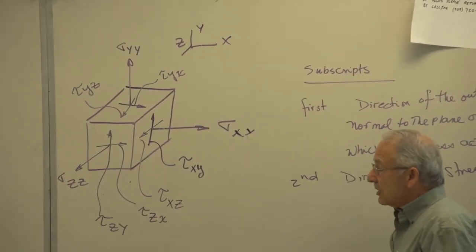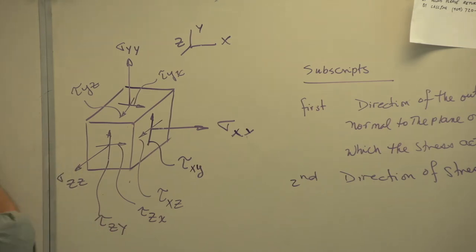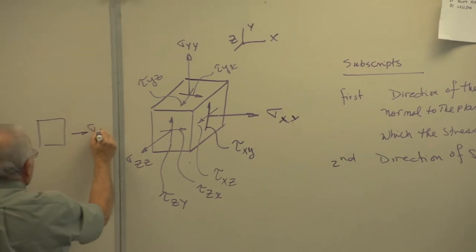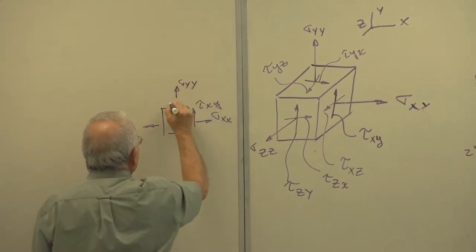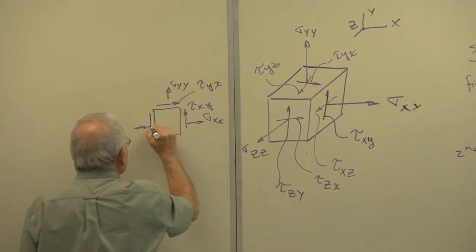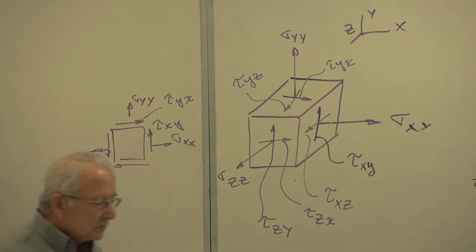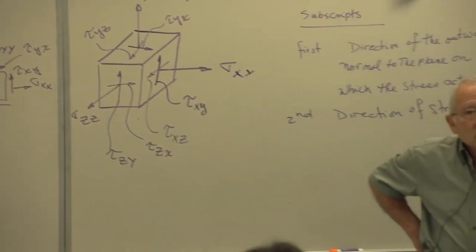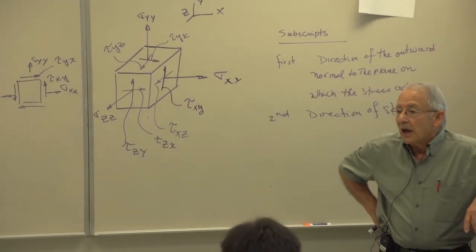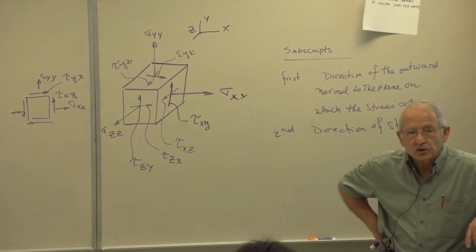The beauty of this notation is that it not only names the stress, but also tells you its sign. If the outward normal is in the positive direction of its axis, that subscript is positive. The product of the two subscript signs gives you the sign of the stress. Positive times positive gives positive — a tensile stress. On the opposite face, negative outward normal times negative stress direction also gives positive — still tensile. If the stress were reversed, negative times positive gives negative — compressive.